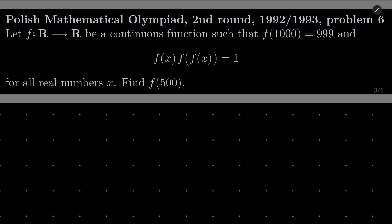Problem number six. Let f be a function from the set of real numbers into itself, let it be continuous, such that f of 1000 equals 999, and moreover this functional equation f of x times f of f of x equals 1 is satisfied. Find f of 500.